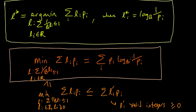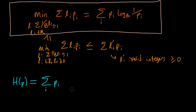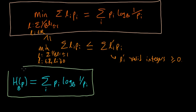This bound seems to be some sort of fundamental quantity — an important function of the p's — so maybe we should give it a name. As you are probably aware, it does have a name already: it is the entropy. H(p) is the entropy for this distribution, and it is the sum over i of pi·log_b(1/pi) — the base-b entropy when we take log base b.